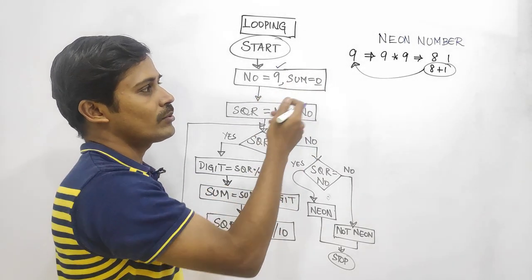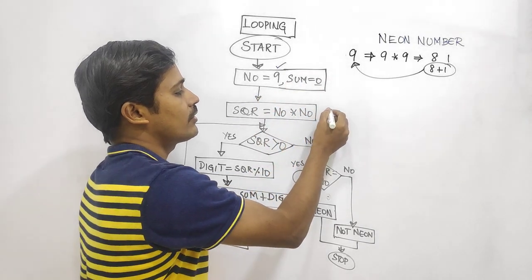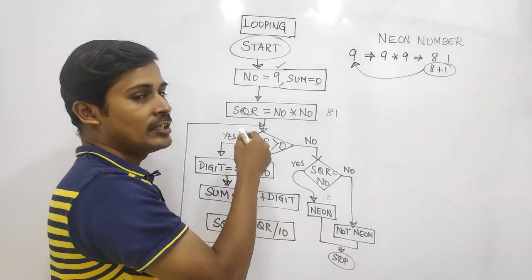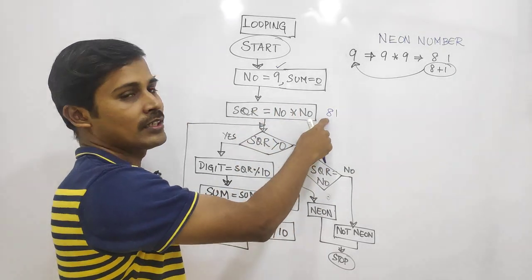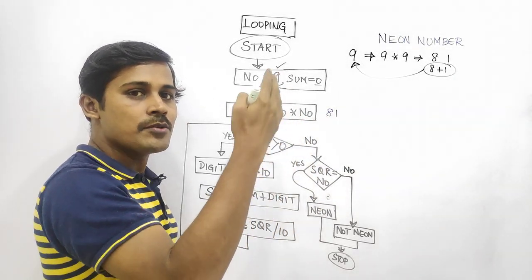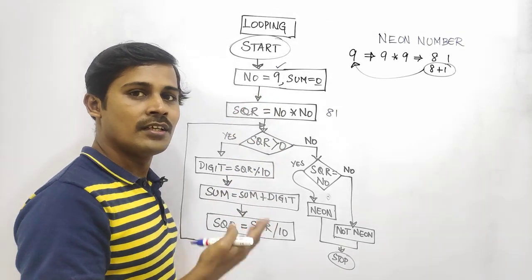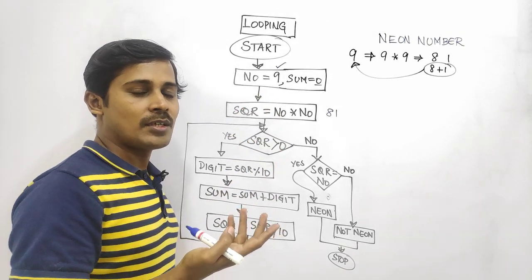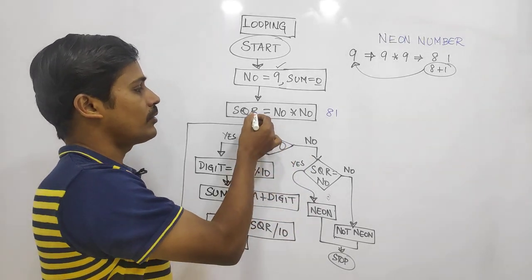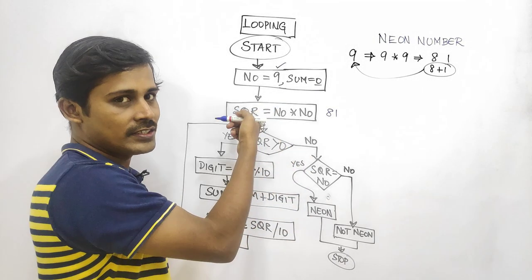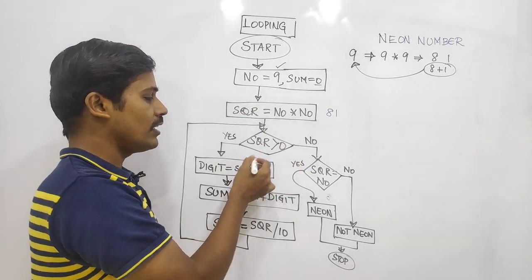The first step is to compute the square. For example, 9 squared is 81. Now we slice 81 digit by digit. We know the sum of digits program — we will apply the same logic here. We check while square is greater than 0.